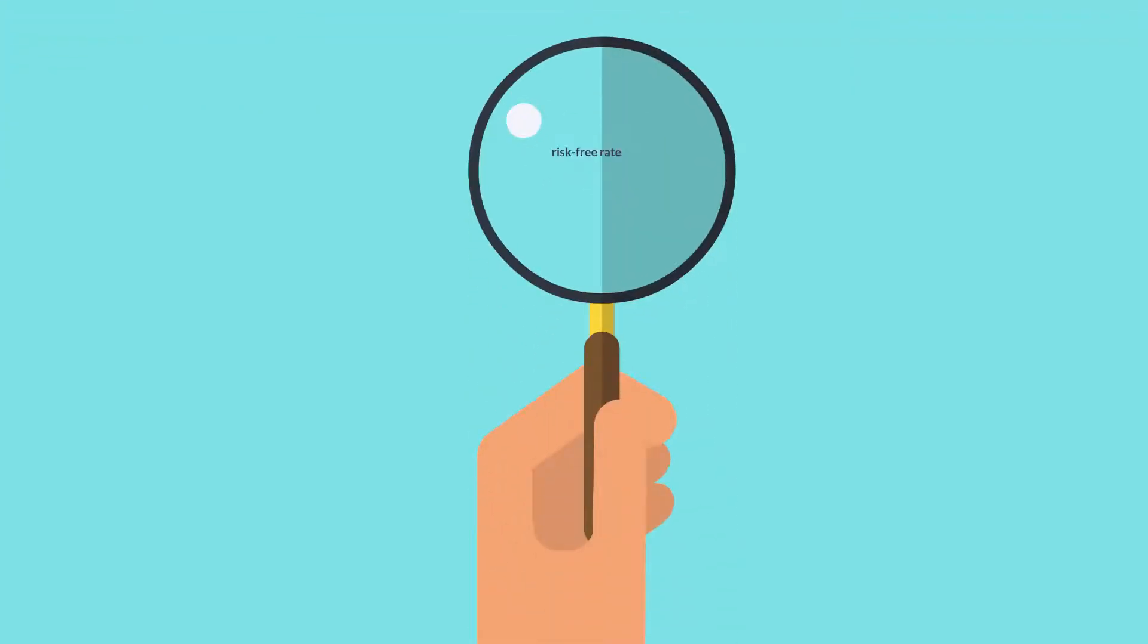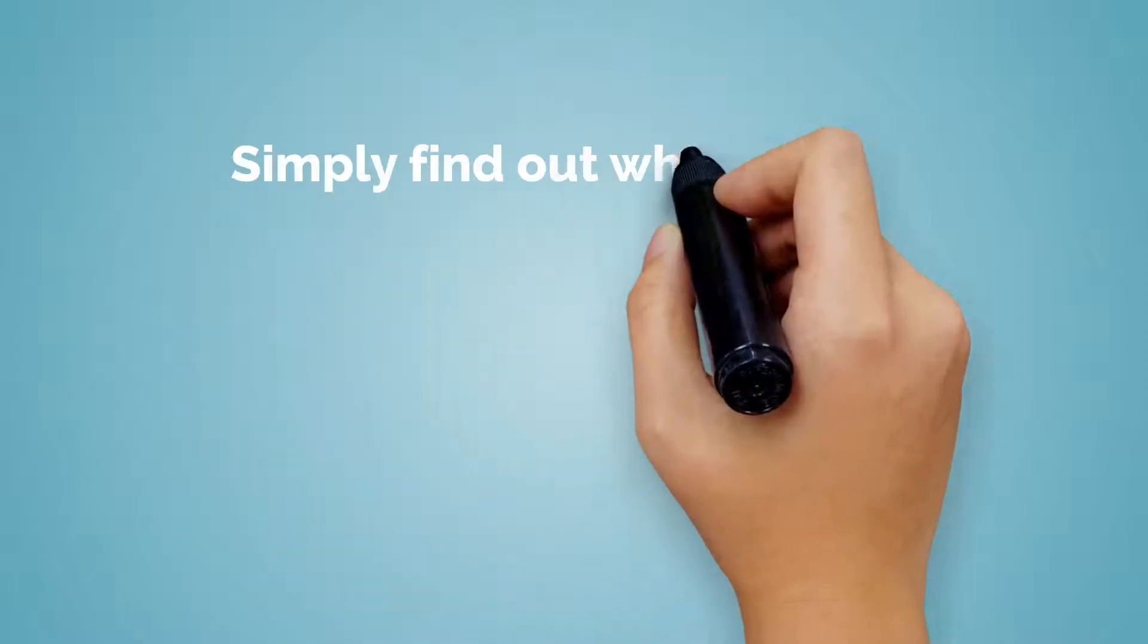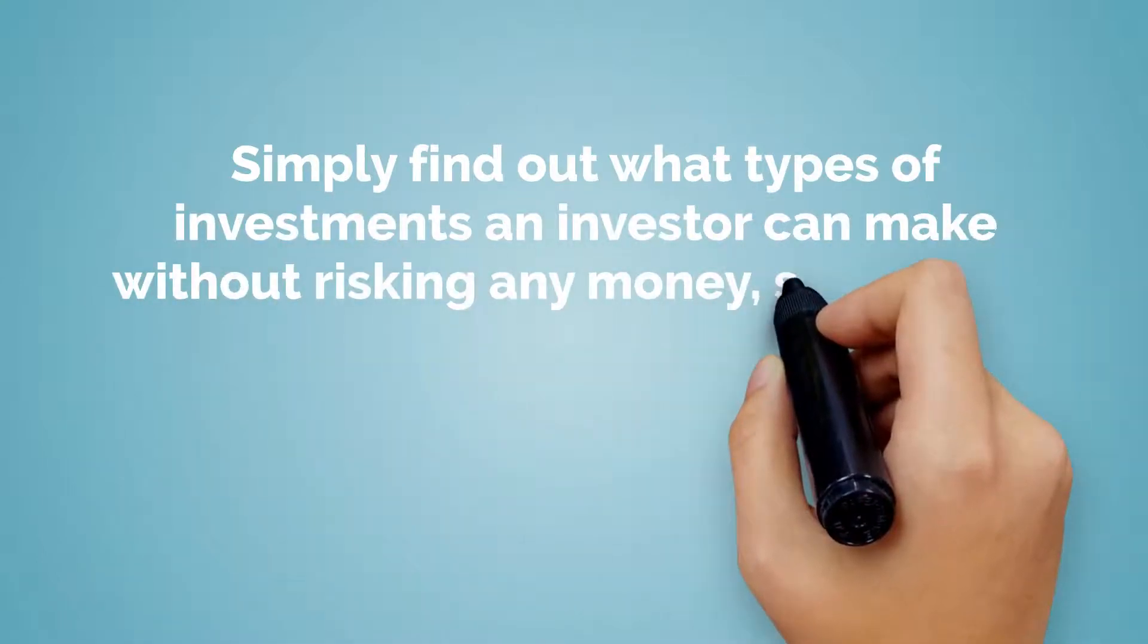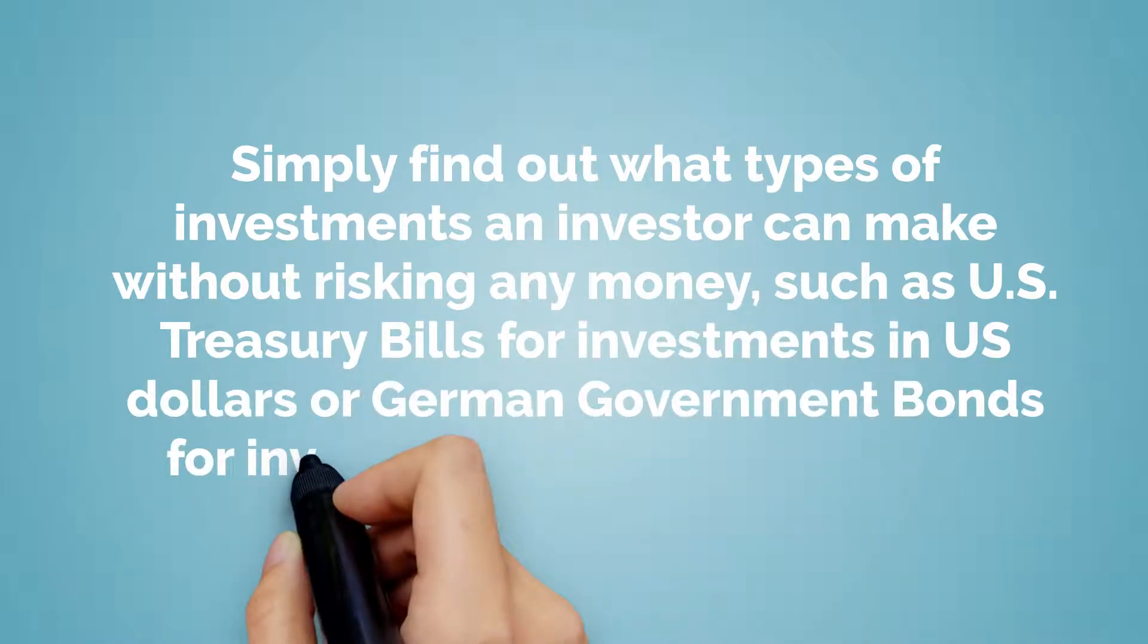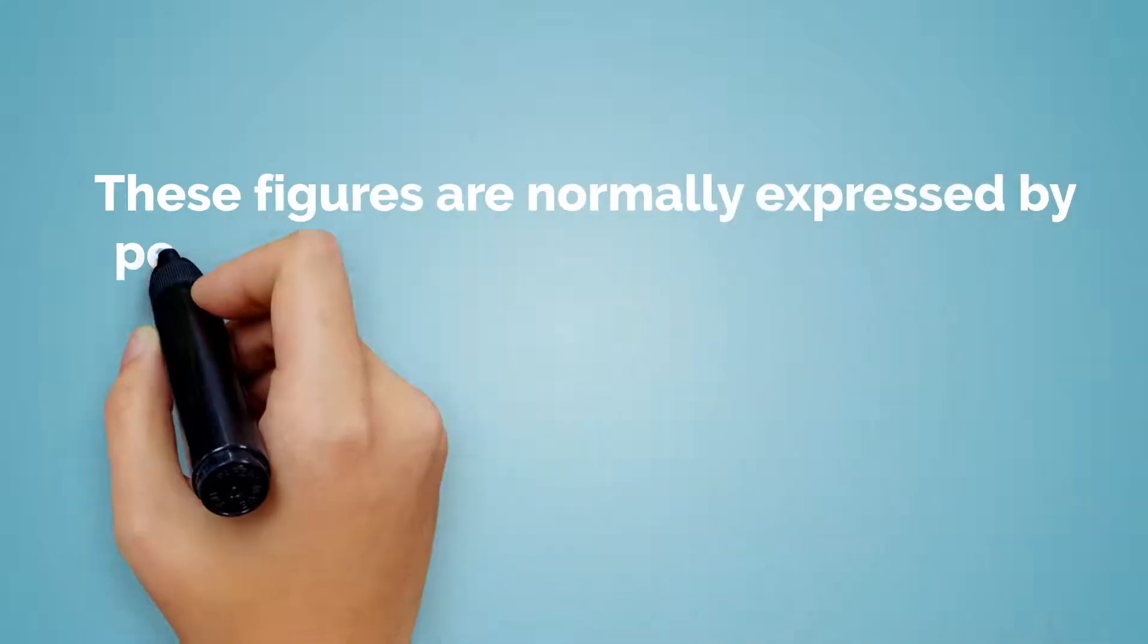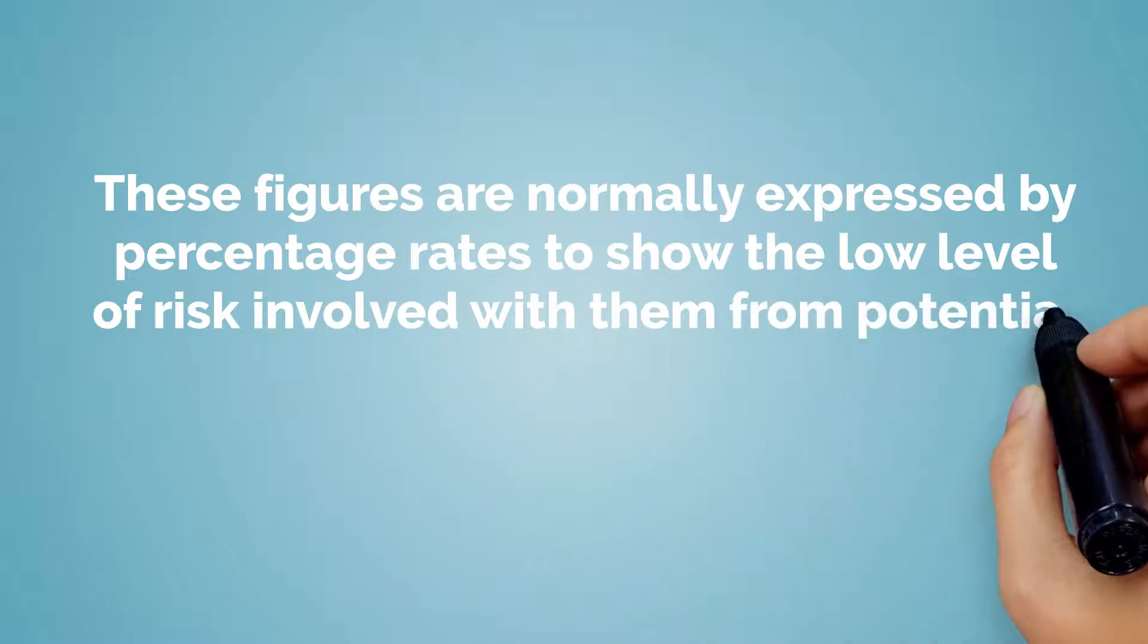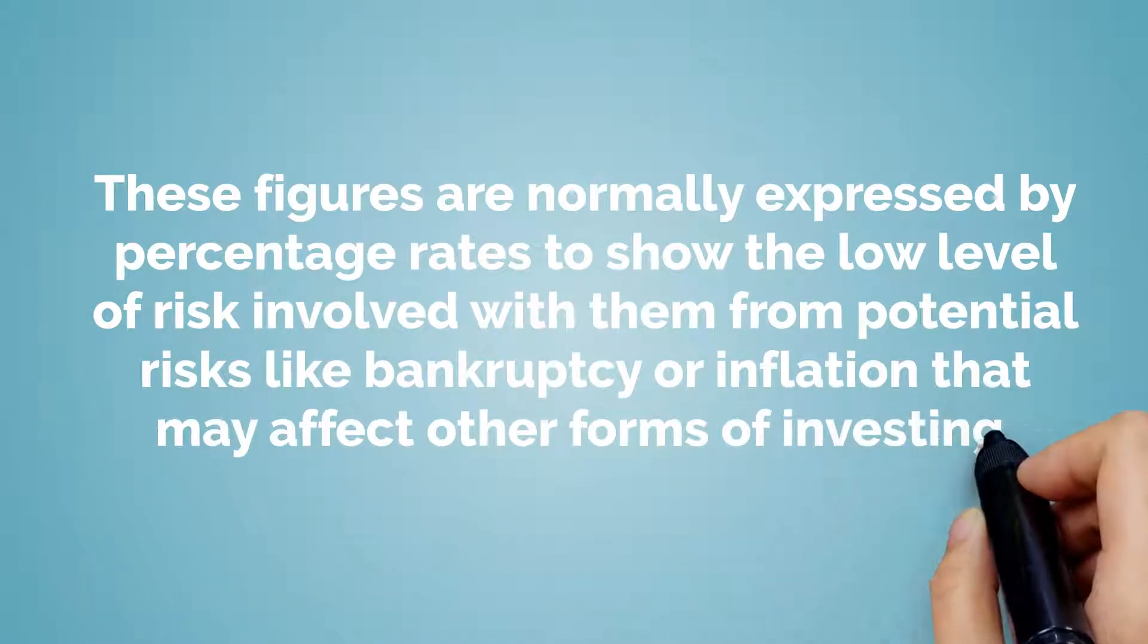The first thing you should do is find a risk-free rate. Finding a risk-free rate is not a difficult task. Simply find out what types of investments an investor can make without risking any money, such as U.S. Treasury bills for investments in U.S. dollars or German government bonds for investment that trades in Euros. These figures are normally expressed by percentage rates to show the low level of risk involved with them from potential risks like bankruptcy or inflation that may affect other forms of investing.